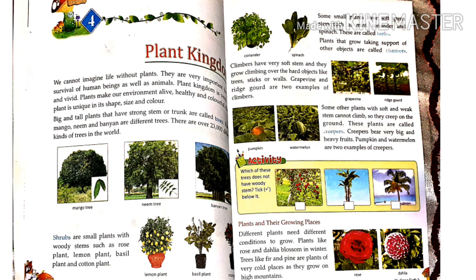Shrubs are small plants with woody stems, such as rose plant, lemon plant, basil plant, and cotton plant. Some small plants have soft green stems, such as mint, coriander, and spinach.